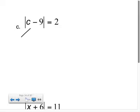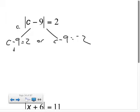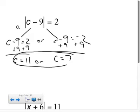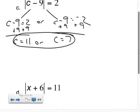Part C, no different. Set up your two different equations. C minus 9 equals 2, or C minus 9 equals negative 2. Solve them separately. We're just going to add 9 to both sides. So either C equals 11, or when I add 9 over here, I get C equals positive 7. And so when I plug it in, 11 minus 9 is 2. Absolute value of 2 is 2. 7 minus 9 is negative 2. Absolute value of negative 2 is positive 2.